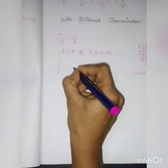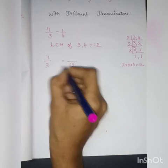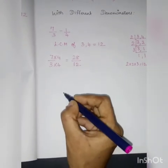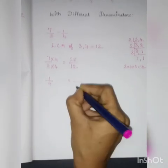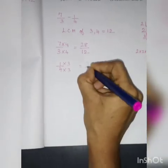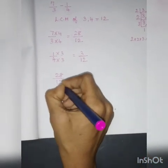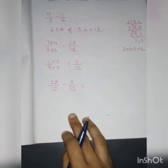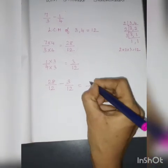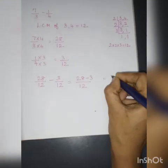Now I am going to convert the denominators to 12. For 7 by 3: in the 3 times table, how many times does 4 appear? Three 4s are 12, so here also multiply by 4. Seven 4s are 28. For 1 by 4: in the 4 times table, how many times does 3 appear? Four 3s are 12, so one 3 is 3. Now, instead of 7 by 3 minus 1 by 4, I subtract 28 by 12 minus 3 by 12. Denominators are same, so I write the denominator as common and subtract the numerators: 28 minus 3 is 25. The answer is 25 by 12.